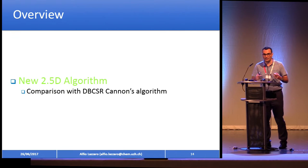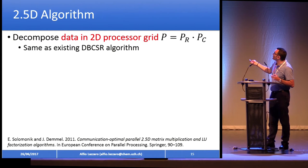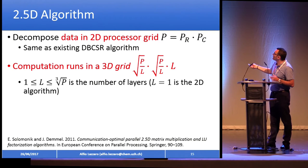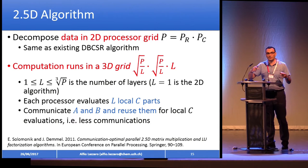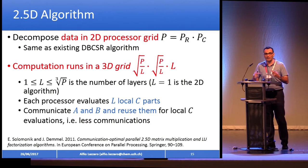We implemented the new 2.5D algorithm to improve the communication side. You first decompose the data in a 2D fashion as before, then redistribute the computation in a 3D grid by introducing an L term — the number of layers — with a certain range. The computation is now distributed in a 3D grid. Each processor now evaluates L local C results, compared to just one in the previous case. You communicate A and B as usual, but then reuse those A and B for local computation, reducing the total amount of communication.